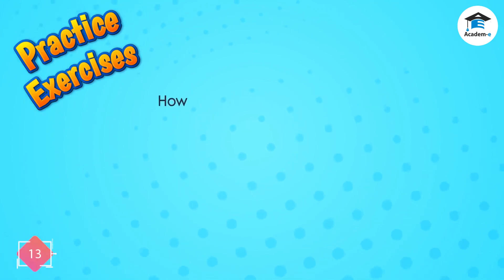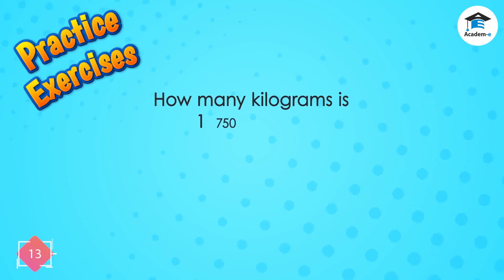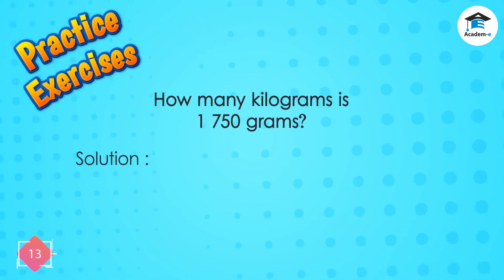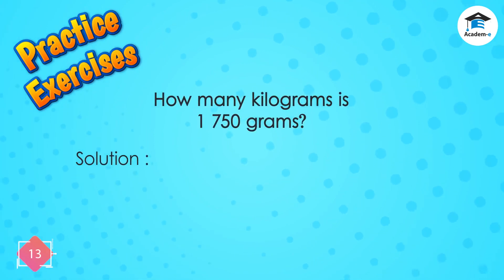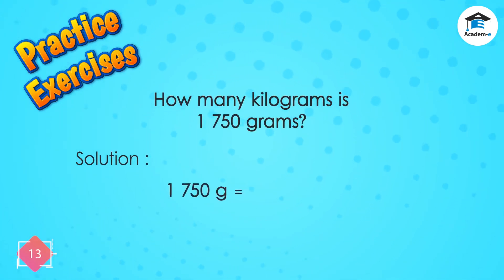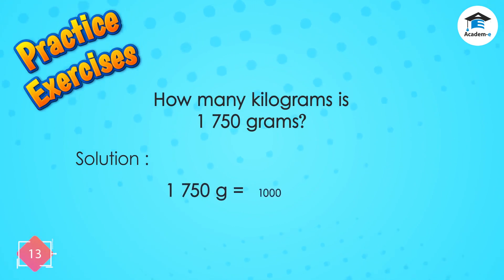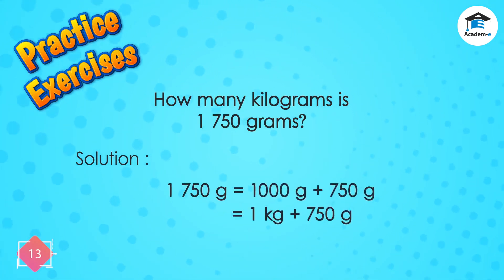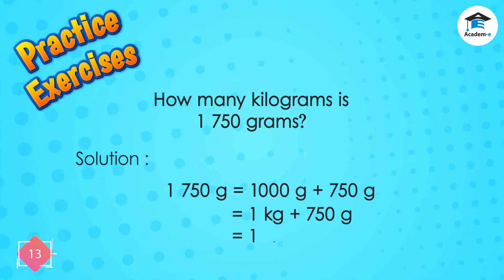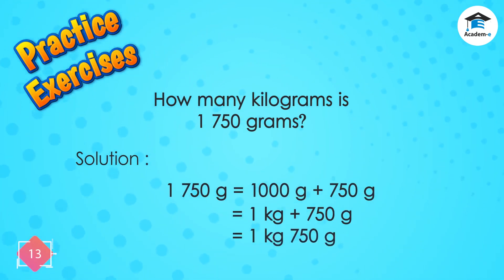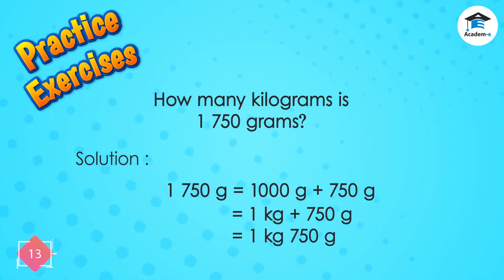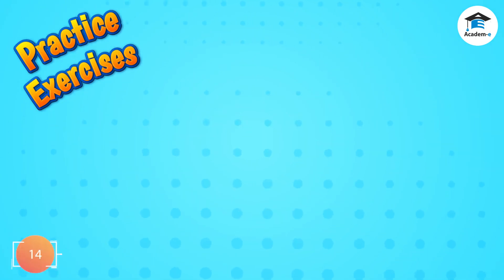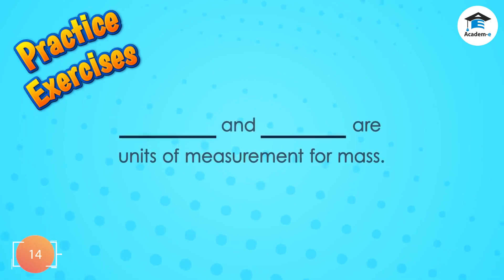How many kilograms are there in 1,750 grams? 1,750 grams is equal to 1,000 grams and 750 grams, which is equivalent to 1 kilogram and 750 grams. Therefore, the answer is 1 kilogram 750 grams.